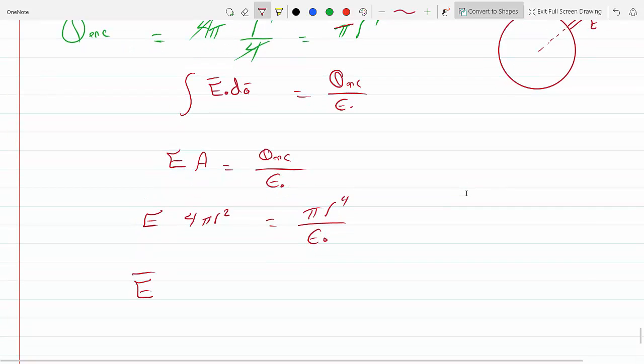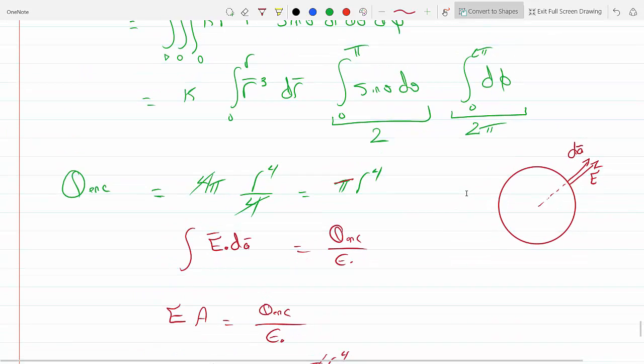And so now if I divide I will get, π cancels the π, so I will get r⁴ over, actually r² because r⁴ over r², over 4 epsilon.